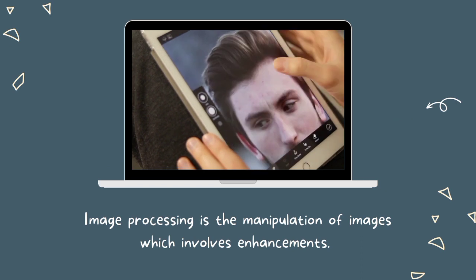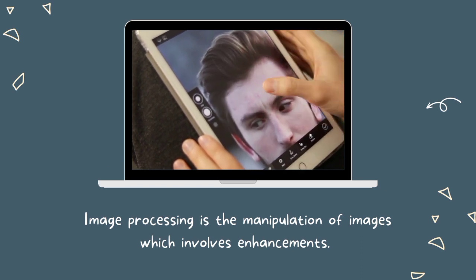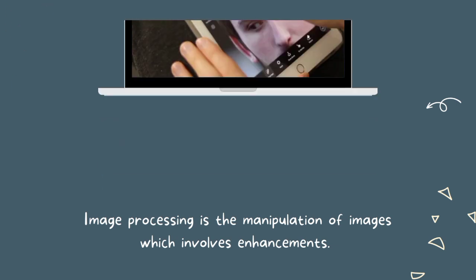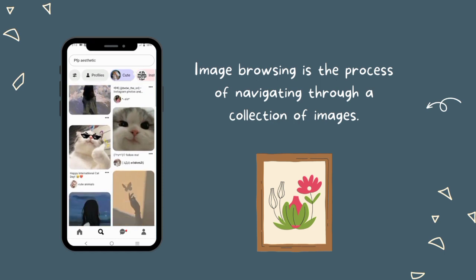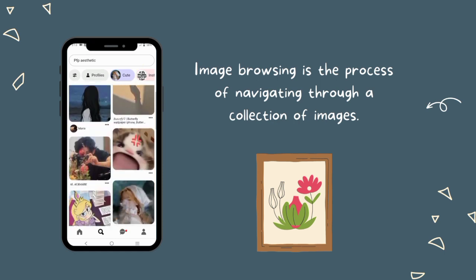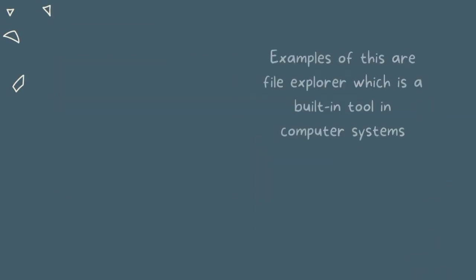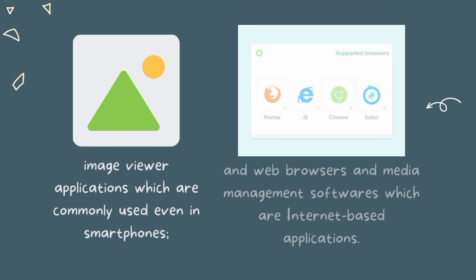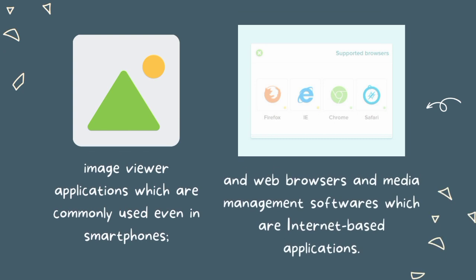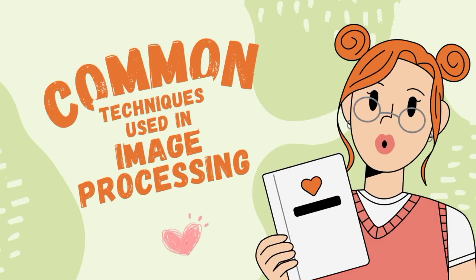Image processing is the manipulation of images which involves enhancements. Image browsing, on the other hand, is the process of navigating through a collection of images. Examples of these are File Explorer, which is a built-in tool in computer systems, image viewer applications which are commonly used even in smartphones, web browsers, and media management softwares which are internet-based applications. There are common techniques used in image processing.